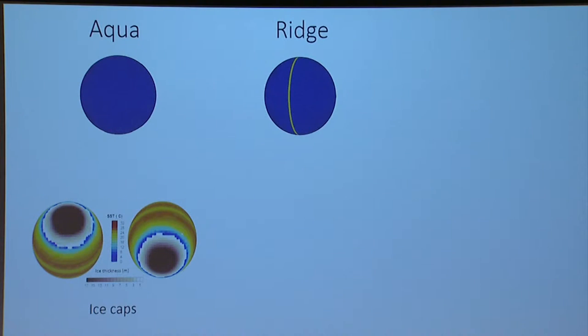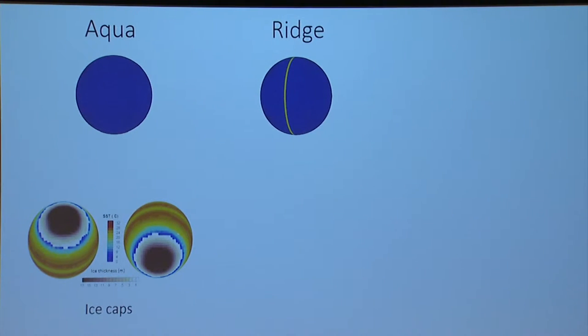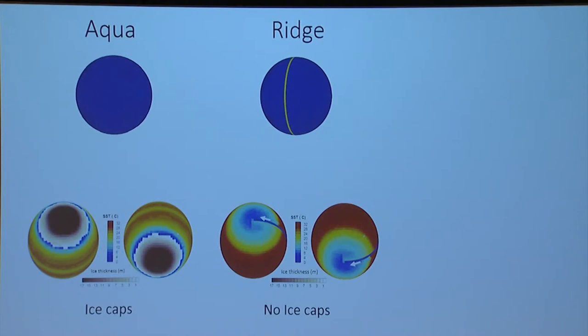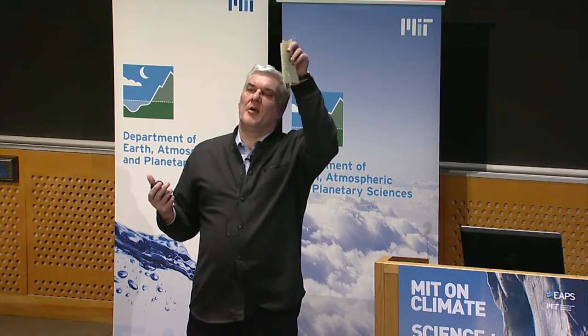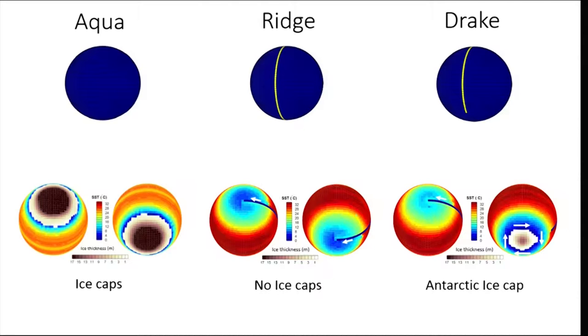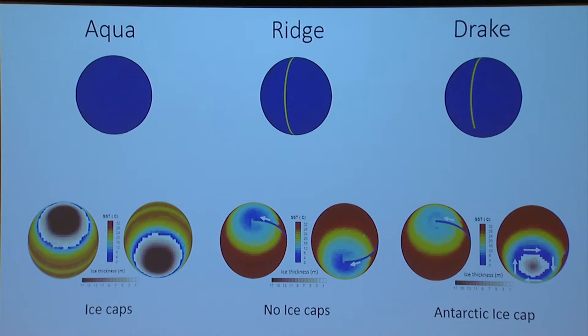But if I put a ridge in the system that connects one pole to the other, the ridge acts as an assist and enables the ocean to move energy to the poles. What happens is that we get no ice caps in this system — the ice goes away when we have a barrier going from one pole to the other. And what happens in the Drake simulation? You get an Antarctic ice cap and no Arctic ice cap. In this way we're able to build up this very important inter-hemispheric asymmetry in climate — the southern hemisphere colder, a big ice cap over Antarctica, and no ice cap with a Drake.